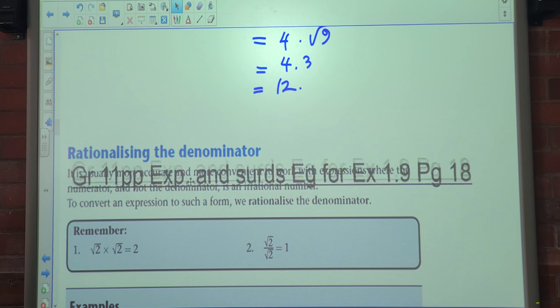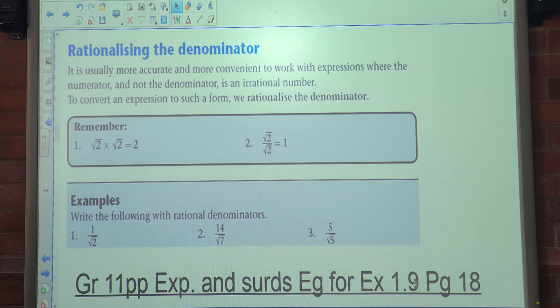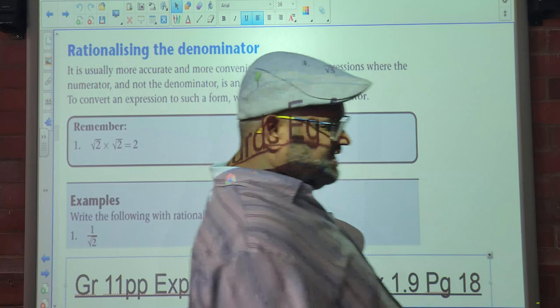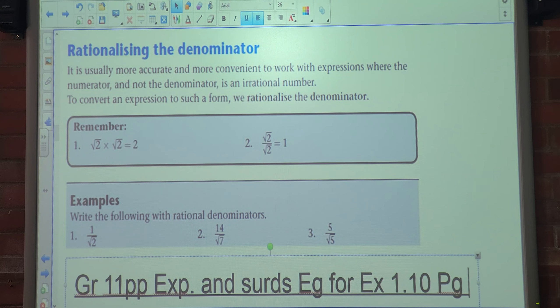Today we're looking at rationalizing the denominator. This is examples for exercise 1.10. Is that correct? 1.10 is the exercise on page 20. Are you sure? Yes sir.